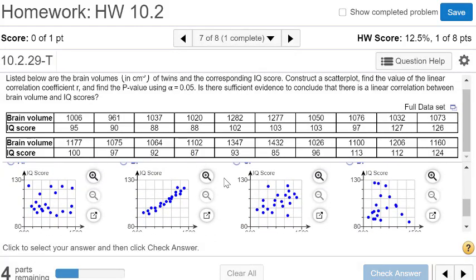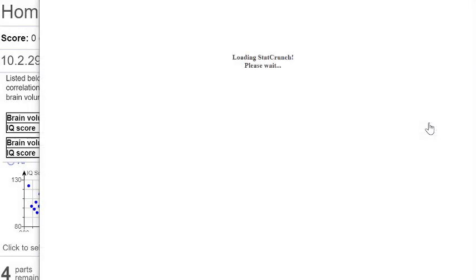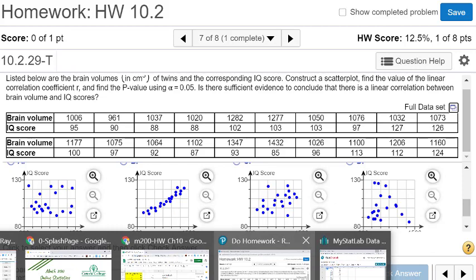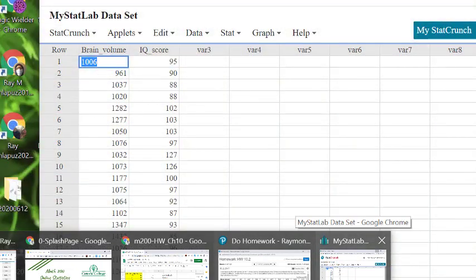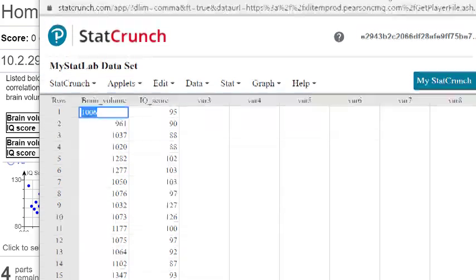Next they want us to do a scatterplot. We can imagine how to plot these paired values, but let's use technology instead. We're going to copy this and put it into StatCrunch. Here's our StatCrunch.